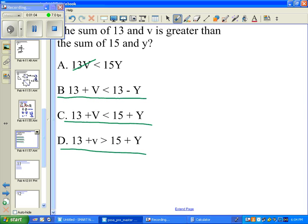Now we have to go to the next part. The sum of 13 and V is greater than. Well, this is less than. Strike that out. This is a less than. And this is a greater than sign.